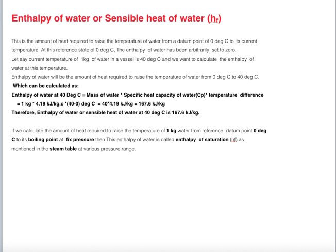Mass of water is assumed to be 1 kg, specific heat capacity of water at constant pressure is 4.19 kJ/kg, and the temperature difference is 40 minus 0 = 40°C. Multiplying these three values gives 167.6 kJ/kg. Therefore, the enthalpy of water or sensible heat of water at 40°C is 167.6 kJ/kg.